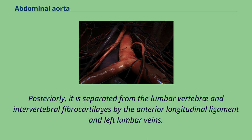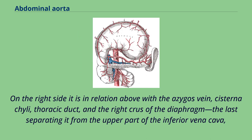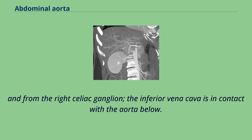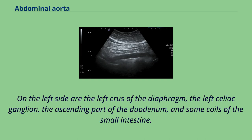Posteriorly, it is separated from the lumbar vertebra and intervertebral fibrocartilages by the anterior longitudinal ligament and left lumbar veins. On the right side it is in relation above with the azygous vein, cisterna chyli, thoracic duct, and the right crus of the diaphragm, the last separating it from the upper part of the inferior vena cava, and from the right celiac ganglion. The inferior vena cava is in contact with the aorta below. On the left side are the left crus of the diaphragm, the left celiac ganglion, the ascending part of the duodenum, and some coils of the small intestine.